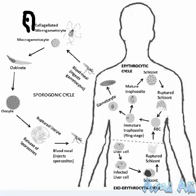The macrogamete formed by macrogametocytes has a particular shape, and this shape has a function. When all the microgametocytes get inserted, the ookinete is formed. The ookinete attaches to the stomach wall of the mosquito.